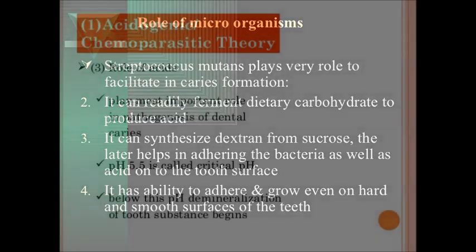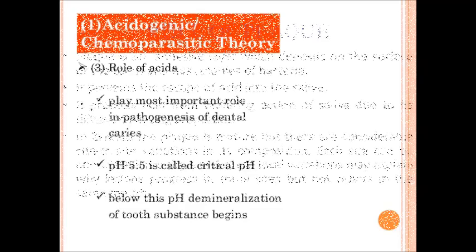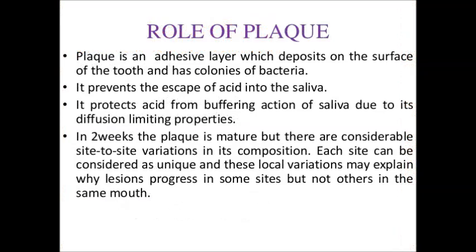The role of acid: acid plays the most important role in the pathogenesis of dental caries. The critical pH is 5.5; below this pH, demineralization of tooth substance begins. The last factor of this theory is the role of plaque. Plaque is the soft, non-mineralized bacterial deposit which forms on teeth and dental prostheses that are not adequately cleaned. Plaque prevents the escape of acid into the saliva and protects acid from the buffering action of saliva due to its diffusion-limiting properties.